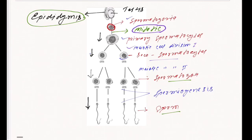Then these secondary spermatocytes are converted into spermatozoa with the help of the second meiotic division. Then this spermatozoa finally differentiates into sperm with the help of a process called spermiogenesis.